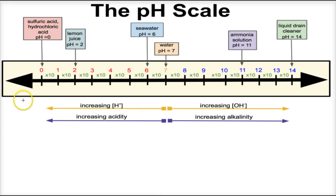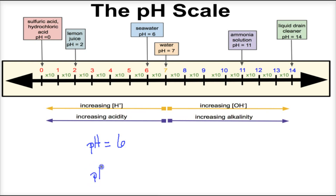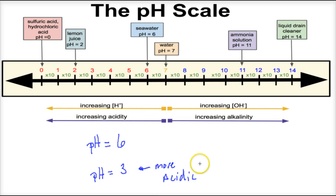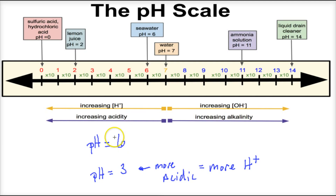We have our pH scale here, and I want to provide a couple of examples applying the concept of the pH scale being exponential. Suppose we have two solutions: one with a pH of six and one with a pH of three. If I ask you which one is more acidic, the solution with a pH of three is going to be more acidic — it has more hydrogen ions floating around in that solution. As we move from seven to zero on the pH scale, there are more hydrogen ions, so a pH of three is more acidic.